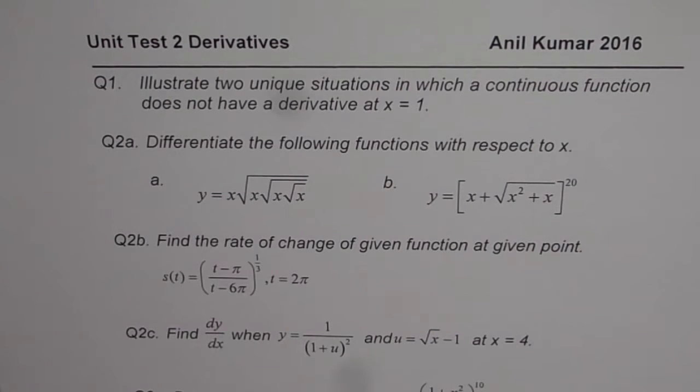Question number 2c is on chain rule, find dy/dx when y equals to 1 over (1 plus u²) and u is square root of (x minus 1) at x equals to 4.